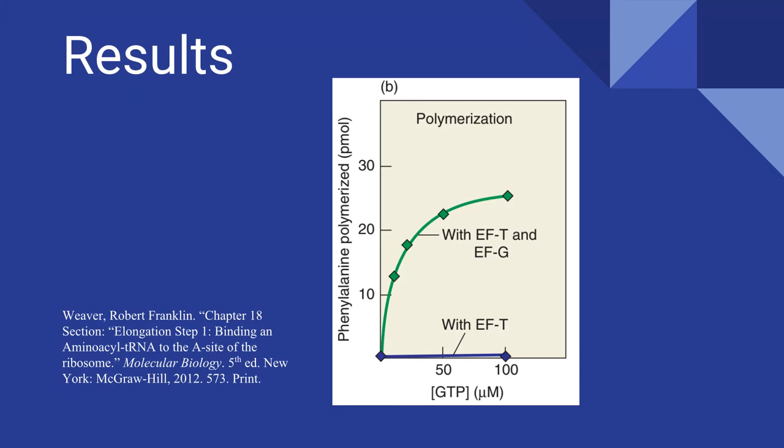Ravel decided to test whether or not EF-G was the one responsible for polypeptide formation. EF-T was added along with EF-G, and a significant increase in polymerization occurred. EF-G must have some role in polypeptide formation.